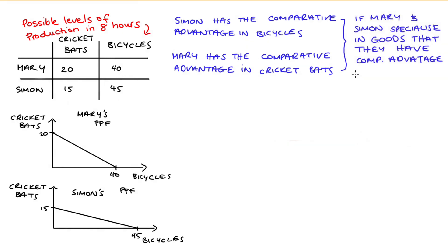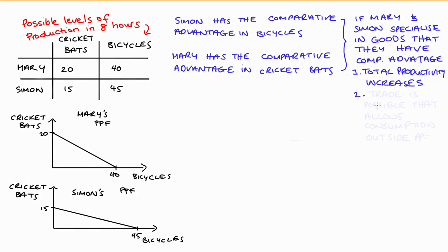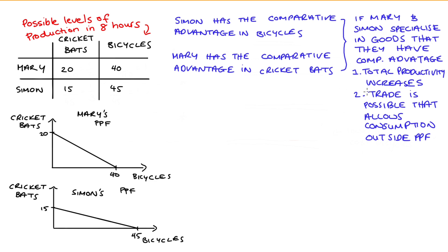What I want to show from this example, in order to demonstrate gains from trade, is that if Mary and Simon specialise in the production of those goods in which they have a comparative advantage — so if Mary only produces cricket bats and Simon only produces bicycles — then our total productivity will increase. And there exists a trade that allows Simon and Mary to consume a bundle of goods currently unavailable to them without trade — a bundle that is outside their PPF.